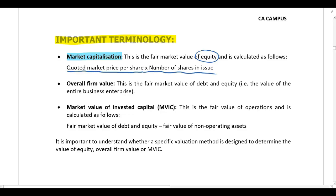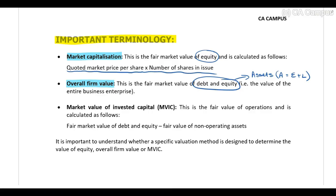The overall firm value is the value of debt and equity combined — in other words, it is the value of the company's assets. This is why our statement of financial position balances: assets equal equity plus liabilities. So if the overall firm value is the value of debt and equity, that must equal the total value of the company's assets.